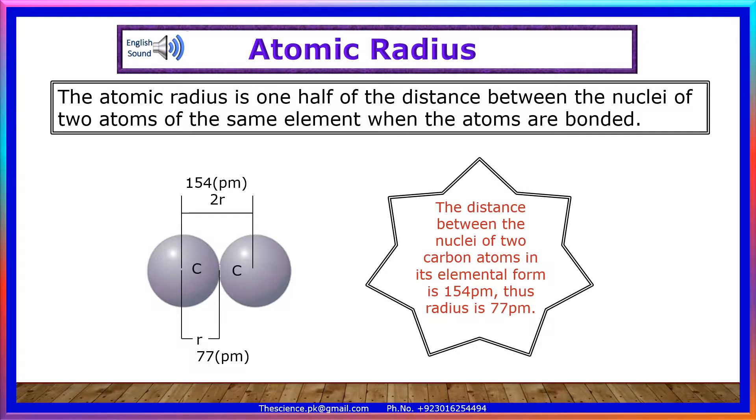The distance between the nuclei of two carbon atoms in its elemental form is 154 picometers, thus the radius is 77 picometers.